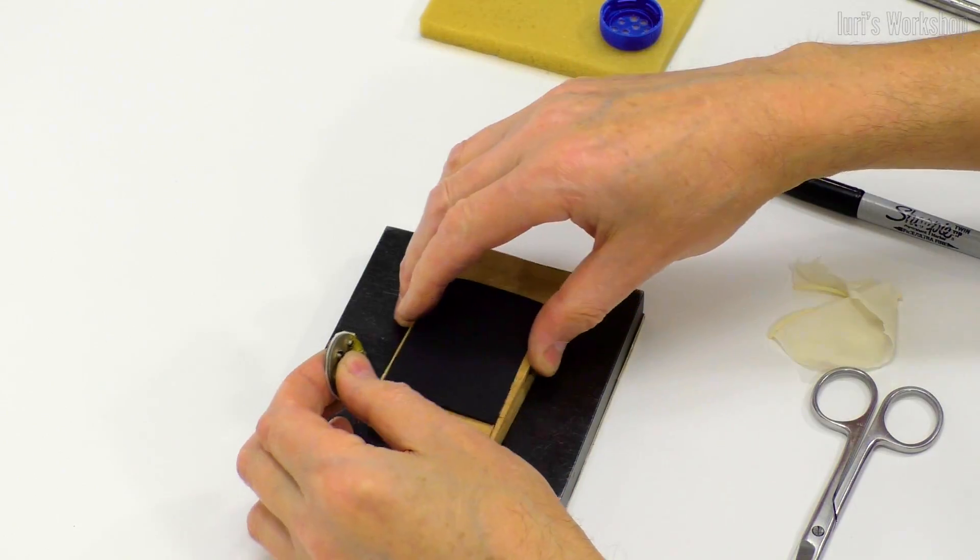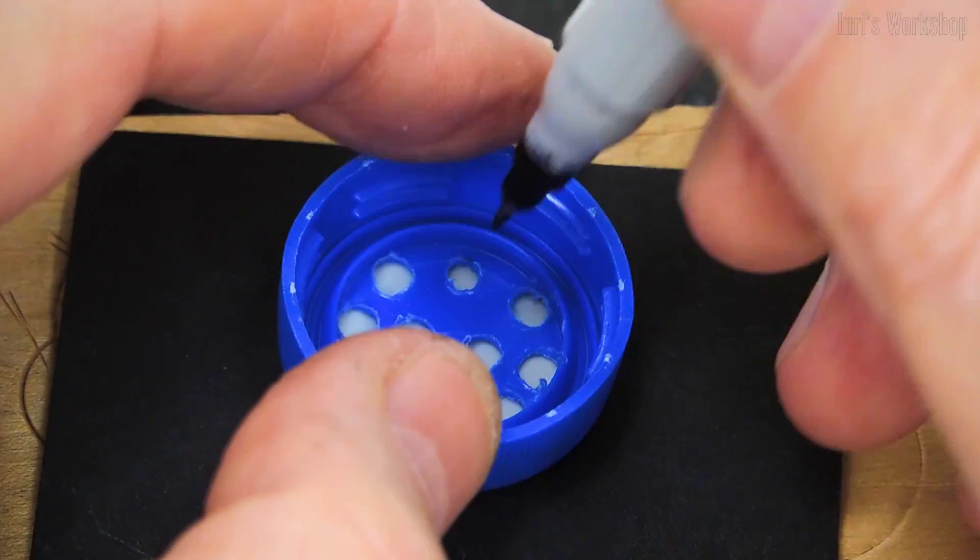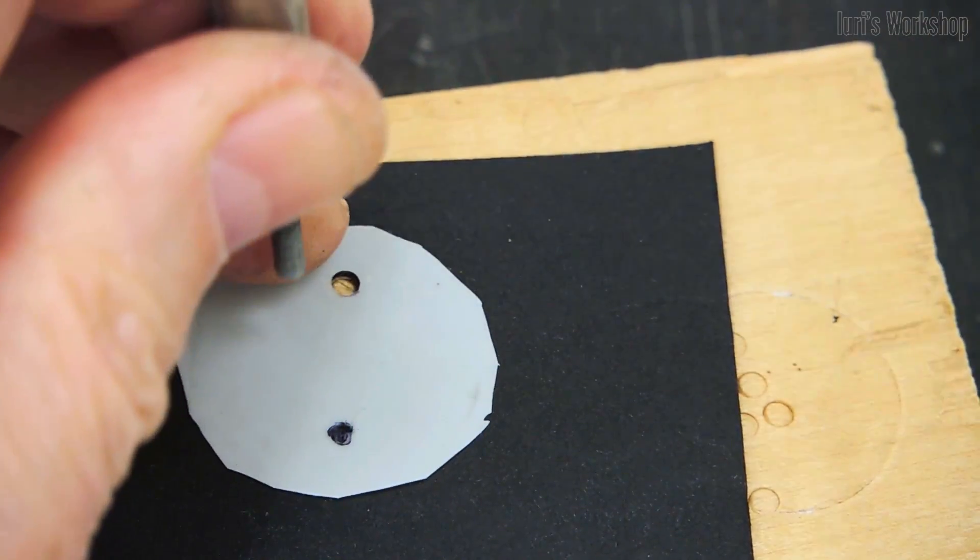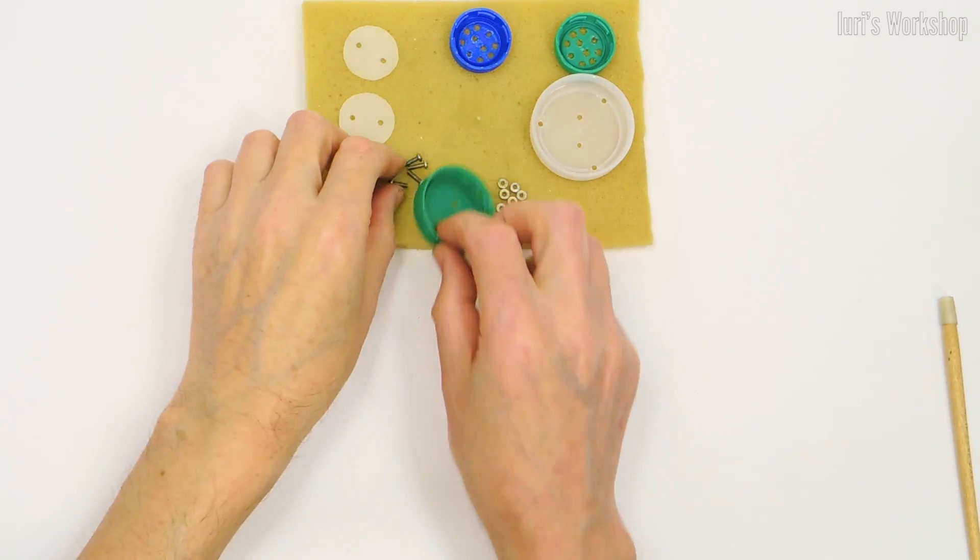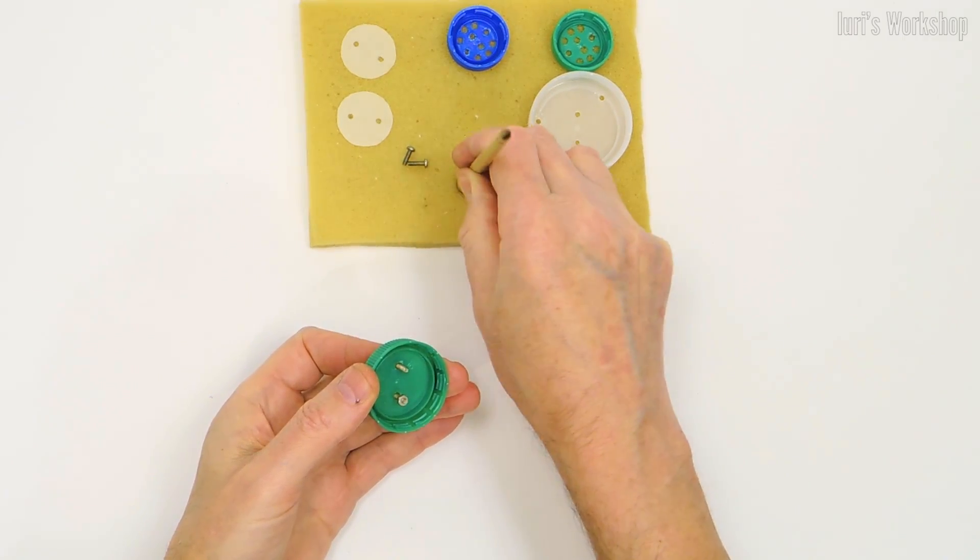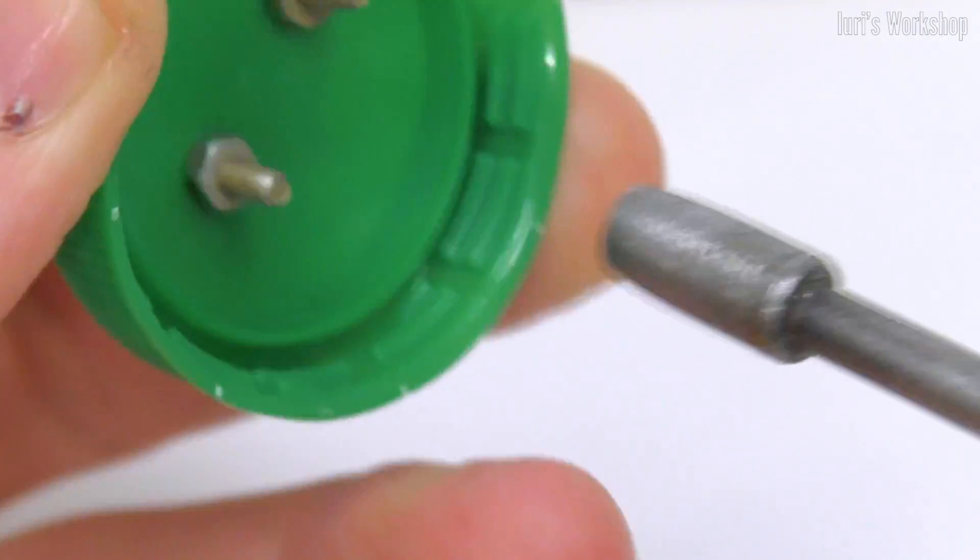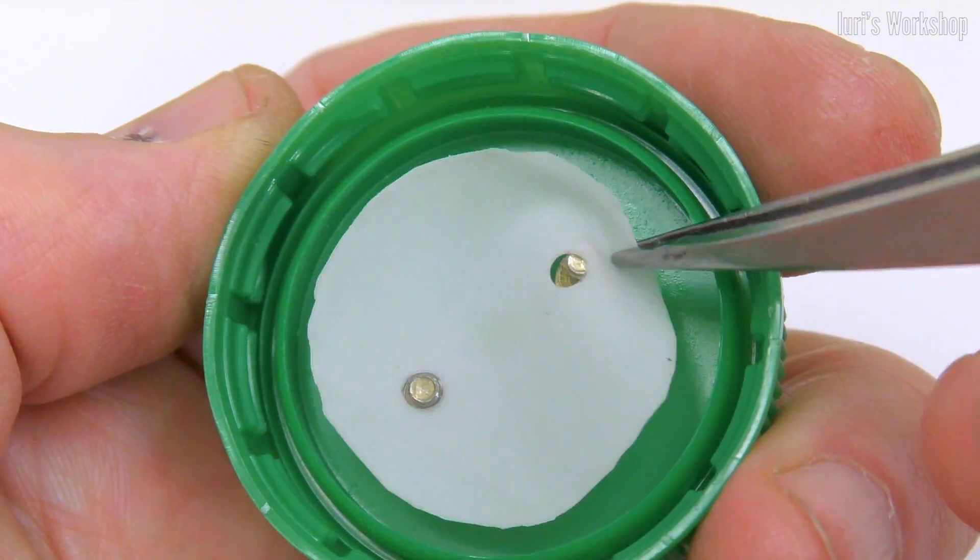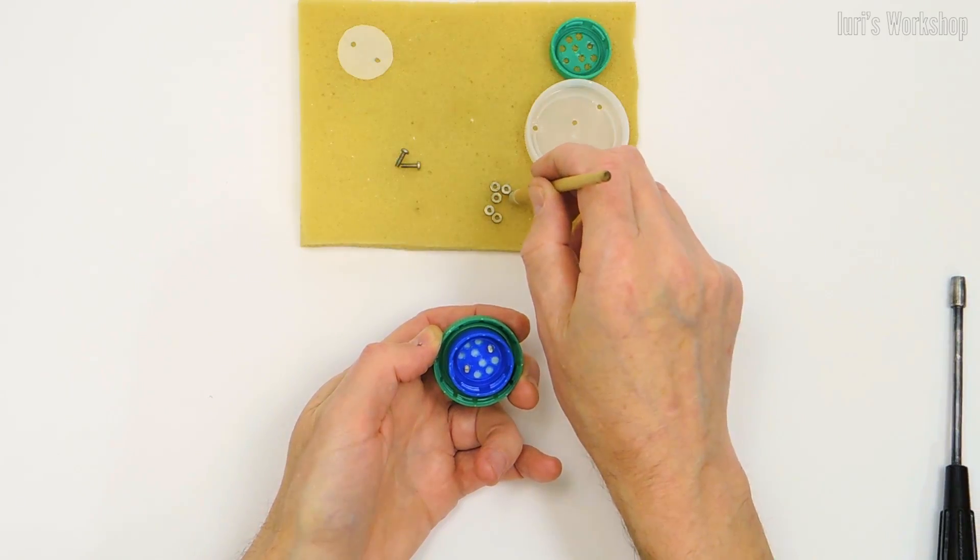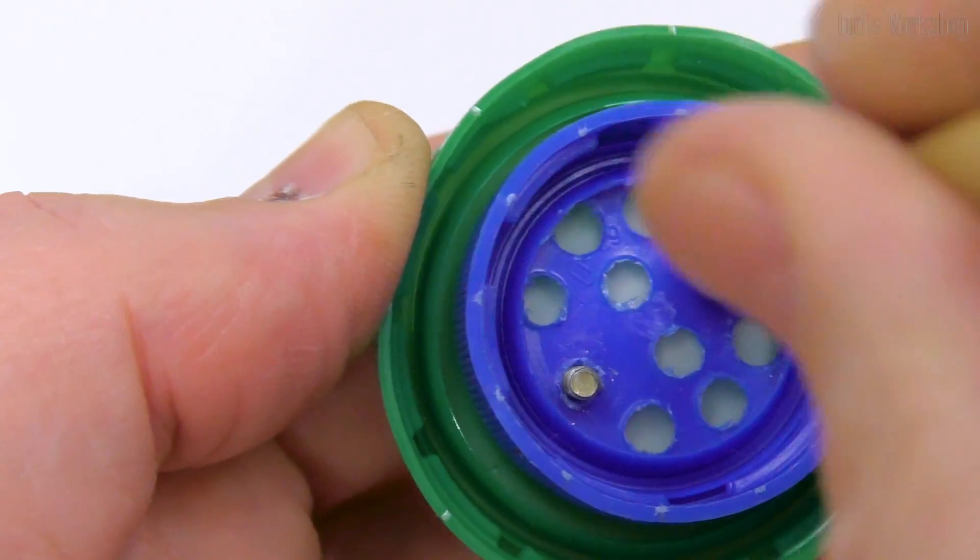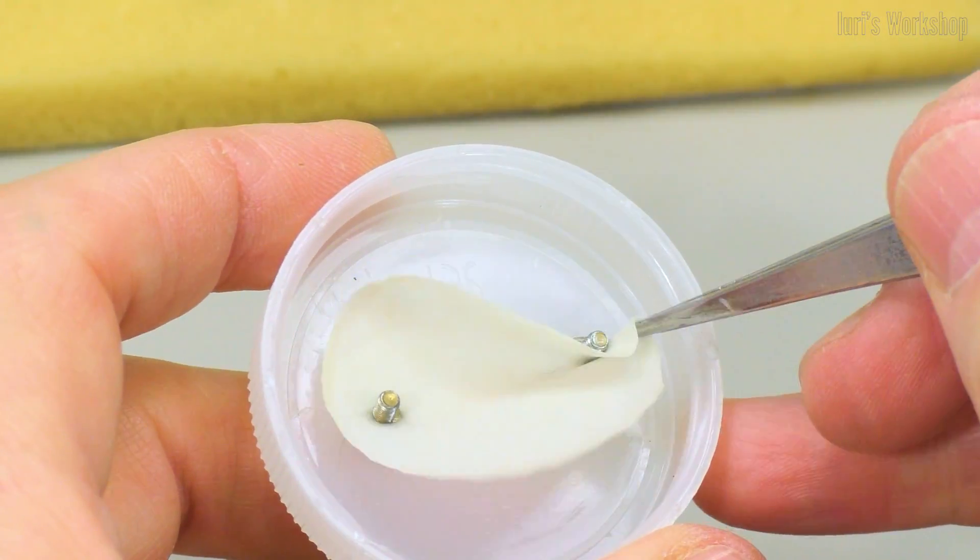The new respirator uses two identical inlet valves. The exhaust valve is made of a larger diameter cap to increase throughput.